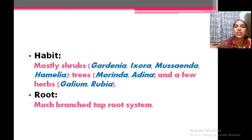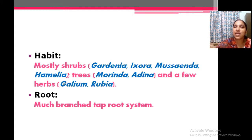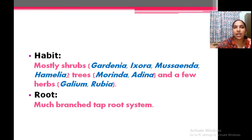Habit: usually they are shrubs. You know Ixora (chekki), our common gandharaj (Gardenia), and coffee — they are all shrubs. Very few are herbs, such as Rubia and Galium.